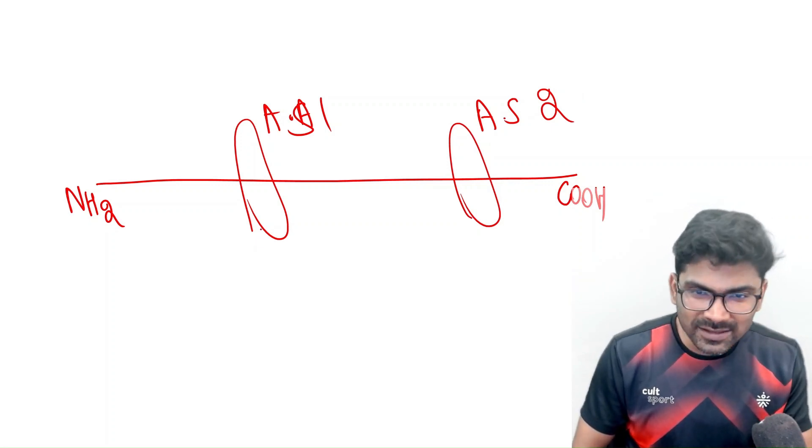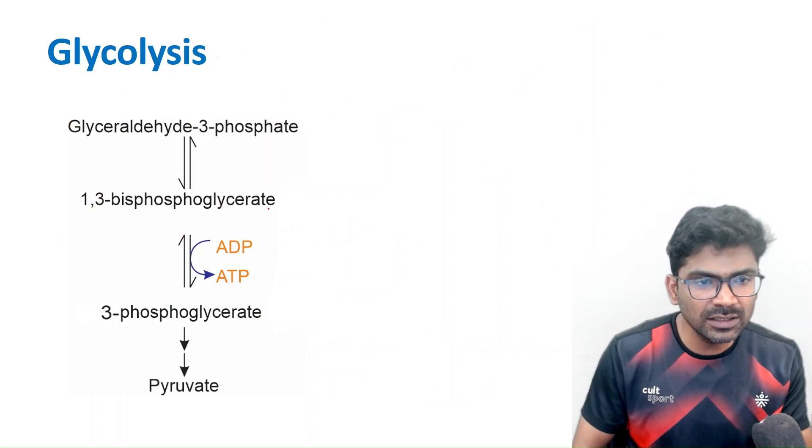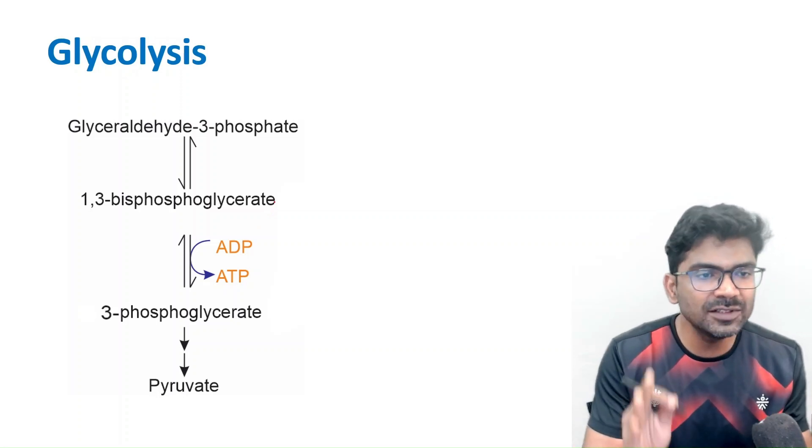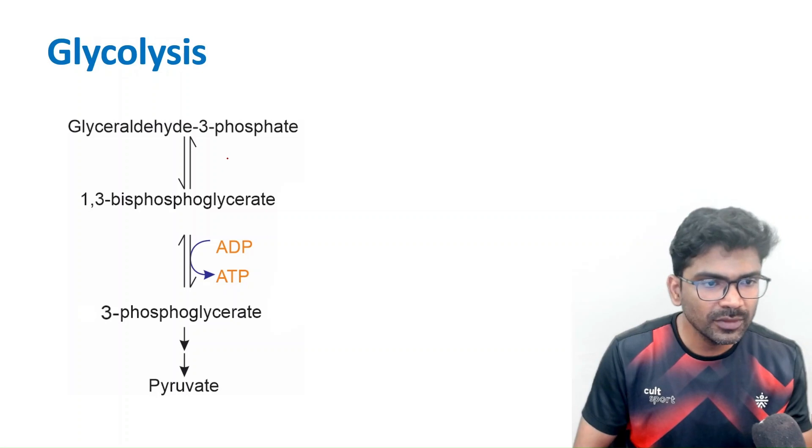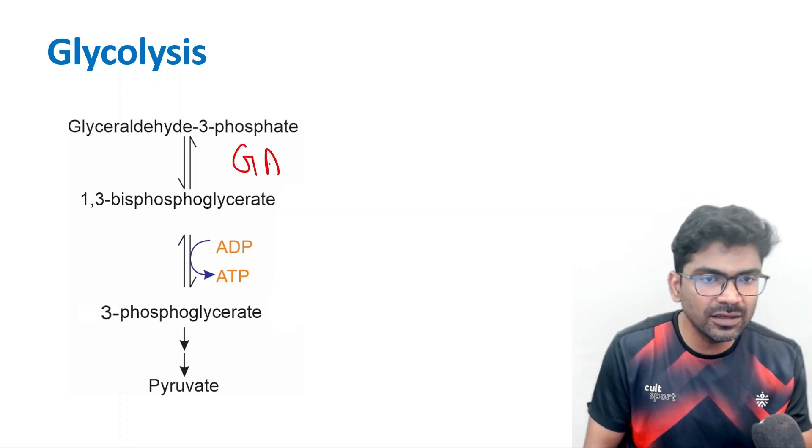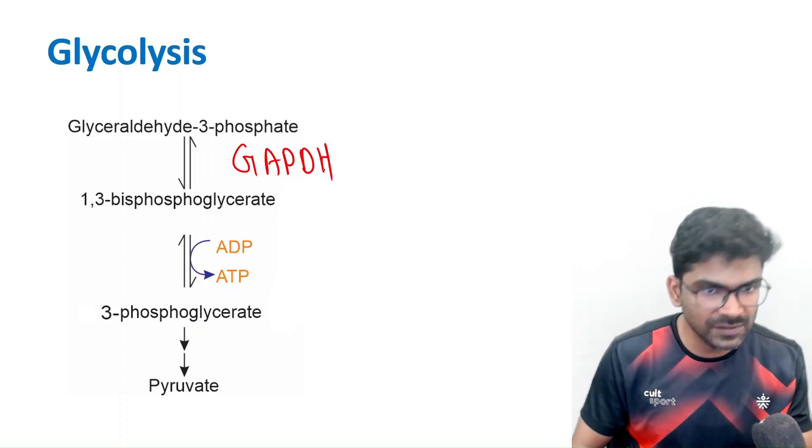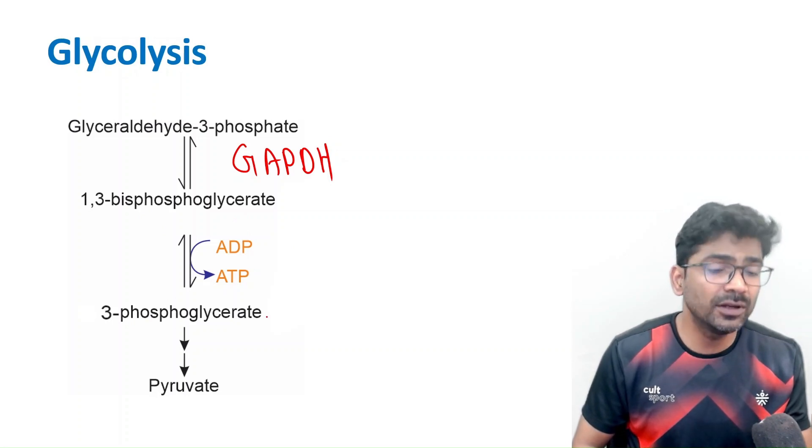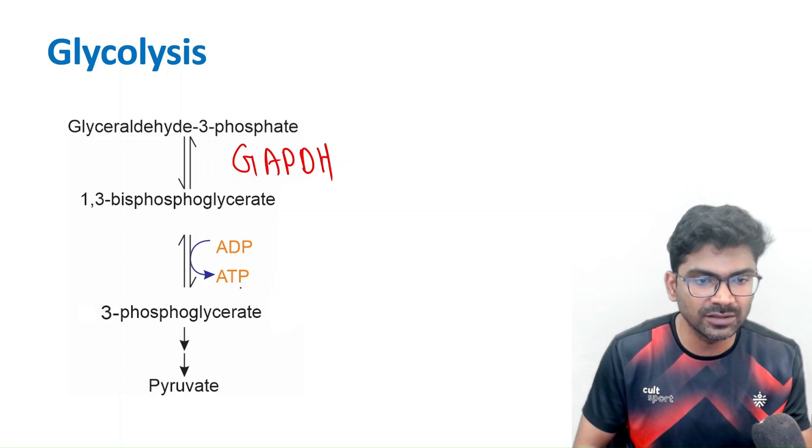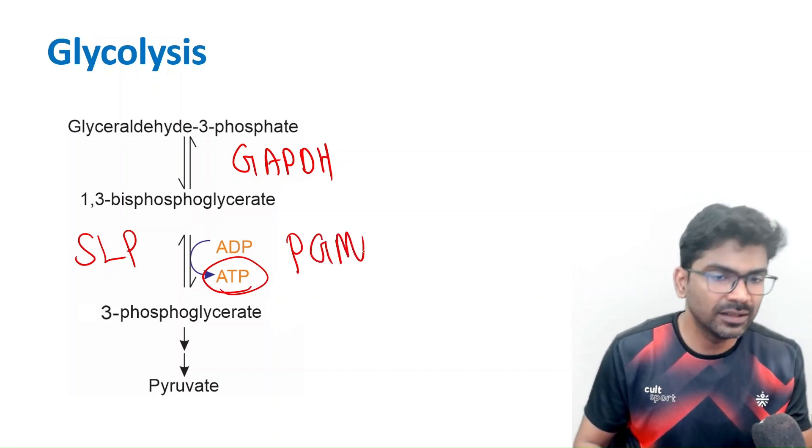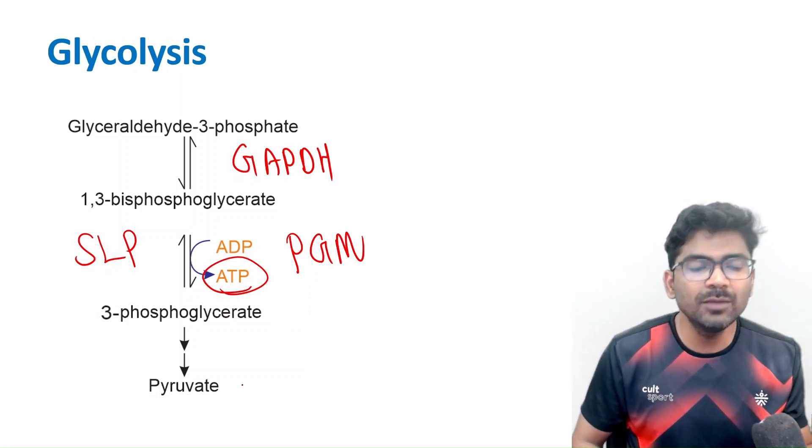So how does this enzyme act? For that, first let us look at one of the portions of glycolysis. I'm not going to show the entire glycolytic pathway, just the relevant section. Glyceraldehyde 3-phosphate is converted to 1,3-bisphosphoglycerate by the action of glyceraldehyde 3-phosphate dehydrogenase enzyme. In the next step, 1,3-bisphosphoglycerate is converted to 3-phosphoglycerate.